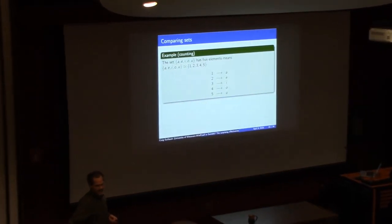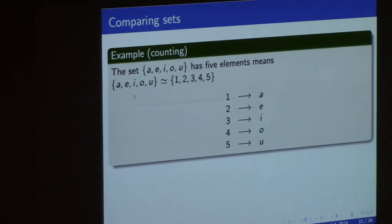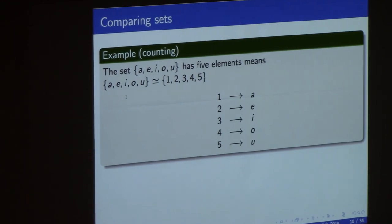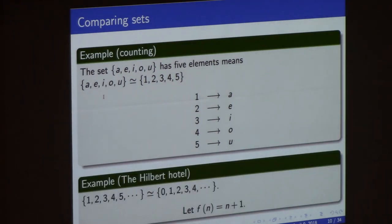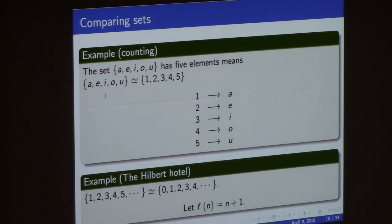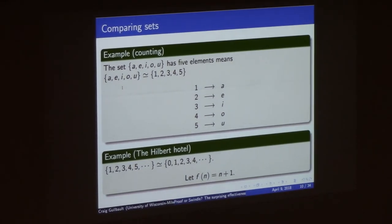For example, when we count the vowels A, E, I, O, U and say there are five vowels, what we're really saying is there is a bijection from {1, 2, 3, 4, 5} to that set of vowels. That seems like an uncontroversial definition, but if you're going to believe it, you have to start believing some weird things. If you take the set of all counting numbers and add one more element, the set you get back is the same size as the one you started with — because you can build a bijective function sending each n to n - 1.